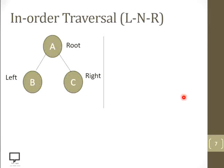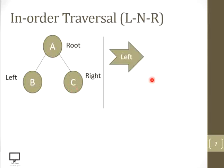Let's move forward with an example where I am going to explain in-order traversal. Let's see what will be the result if I traverse this given tree using in-order traversal, where the root node is A, left child is B, and right child is C. First of all, what we supposed to do? We are supposed to traverse the left child.